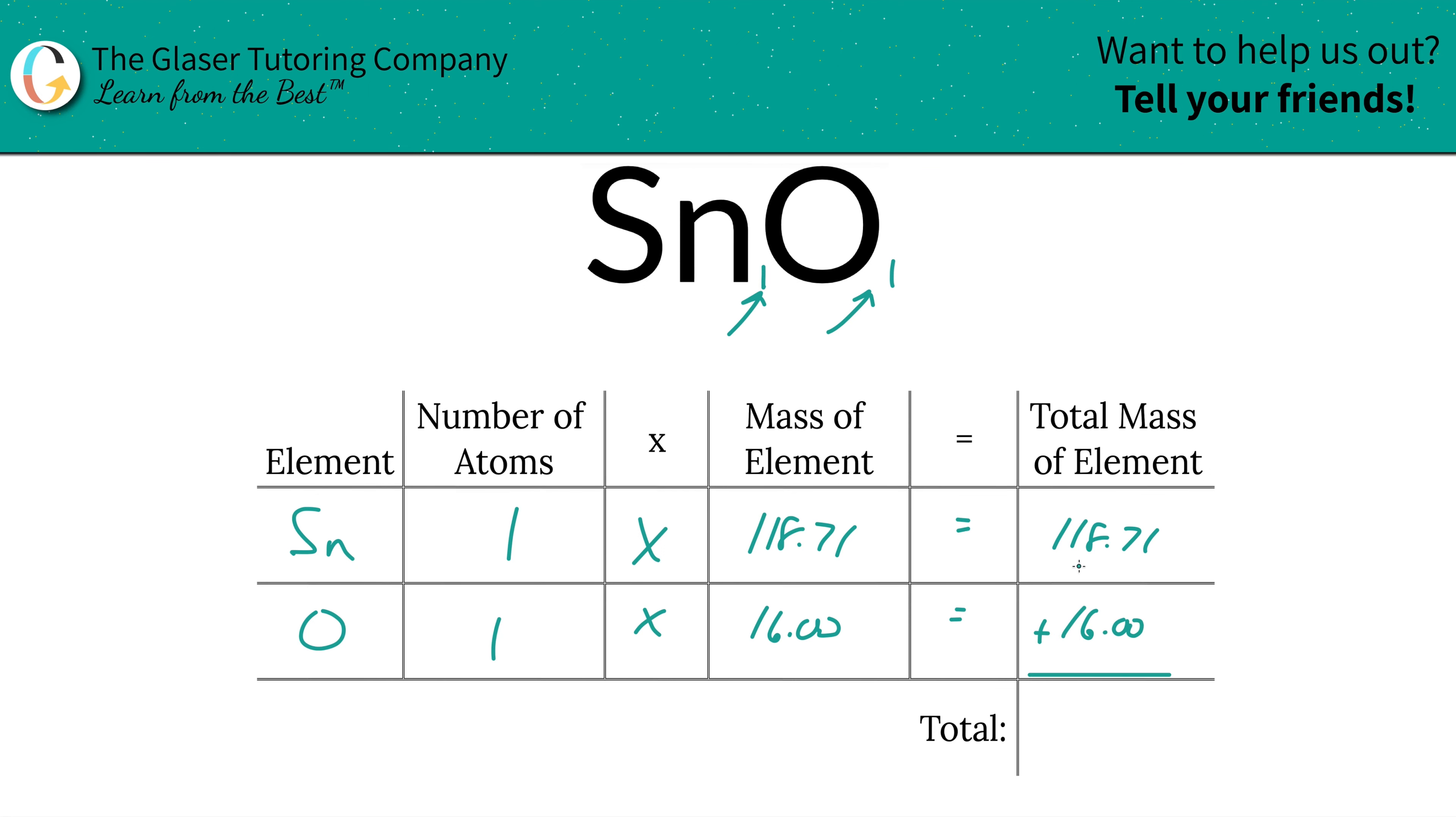Then to find the total mass of the entire compound, all you literally got to do is simply add this column on up. So that's going to be 134.71. And the units there are grams per mole. That's because we're finding molar mass.